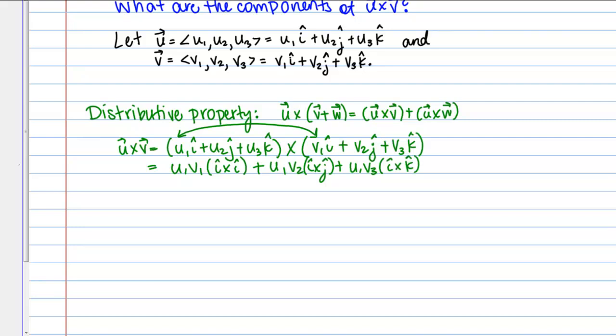And then continuing, plus U2 V1 j cross i, plus U2 V2 j cross j, plus U2 V3 j cross k.